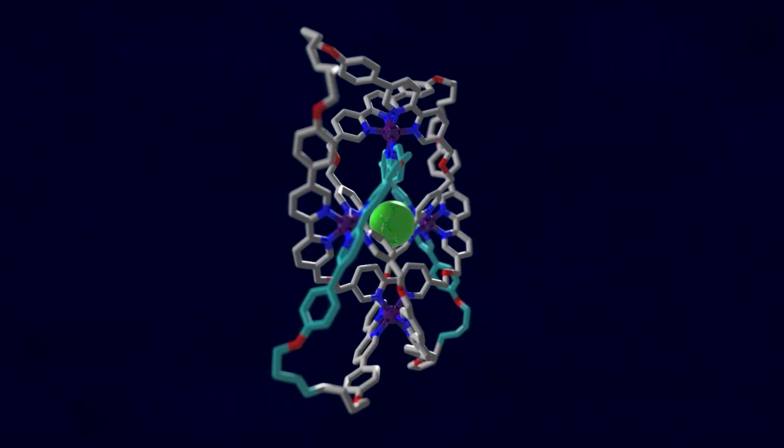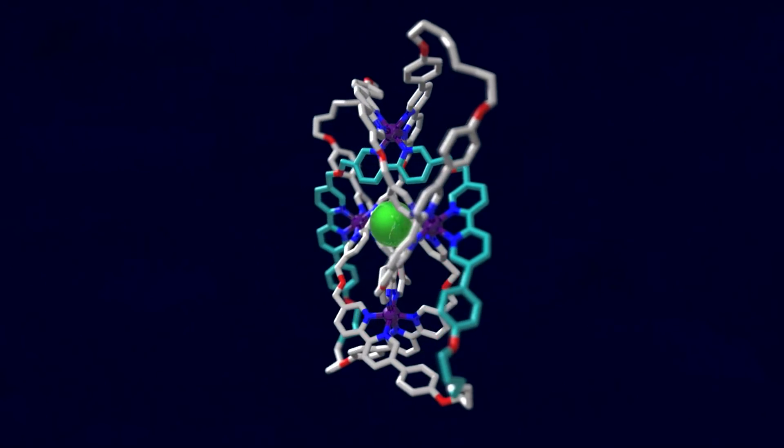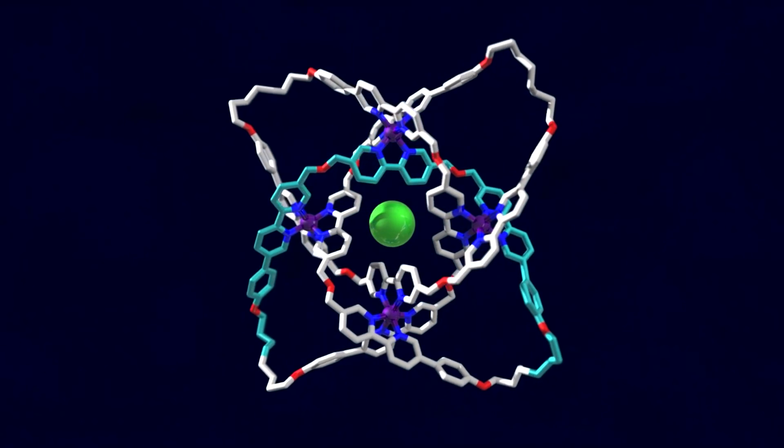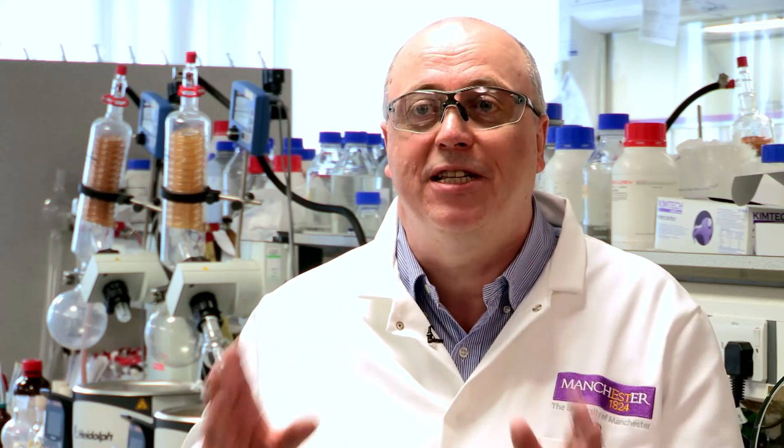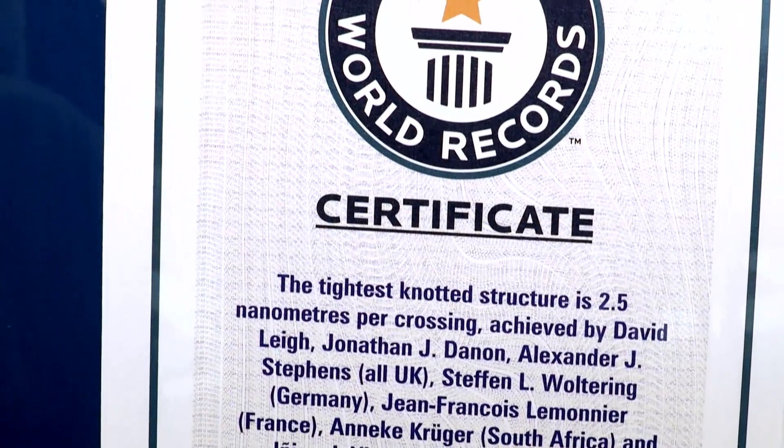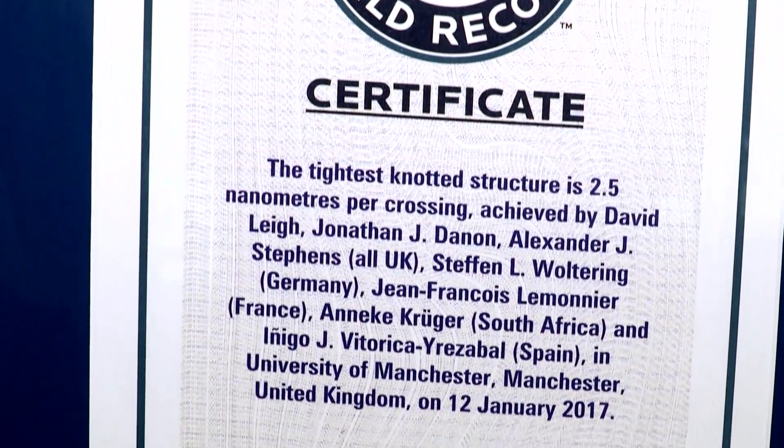The latest molecular knot we've made has got eight crossings in just 192 atom long strand. So that's just 24 atoms per crossing so that makes it the tightest physical structure that's ever been tied. Guinness World Records have given us the world record for the world's tightest knot.